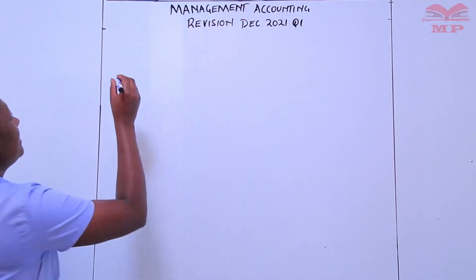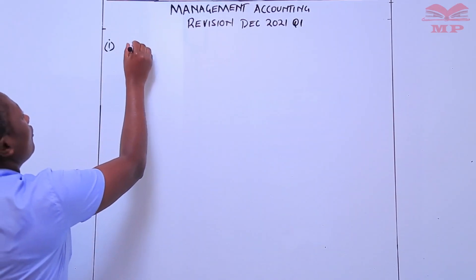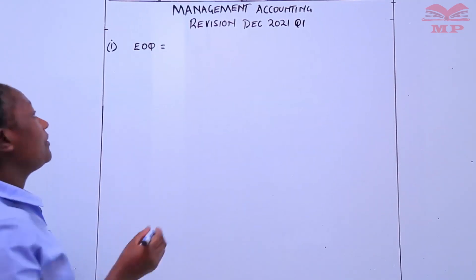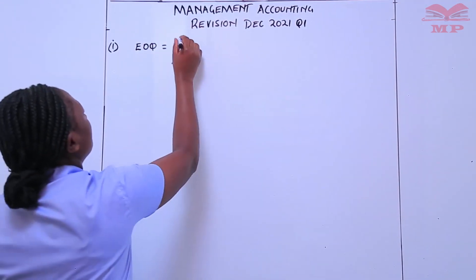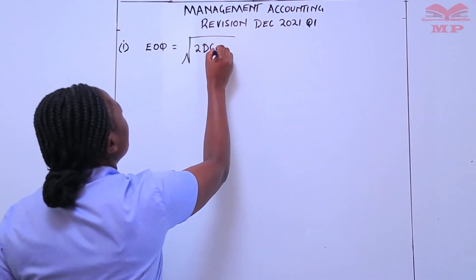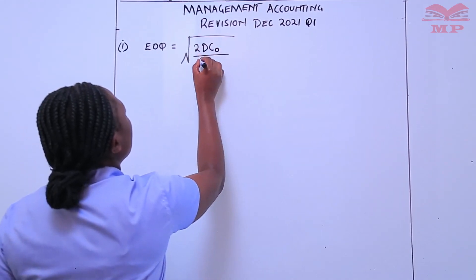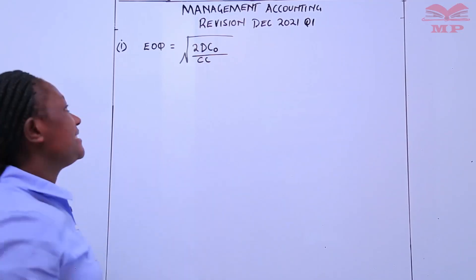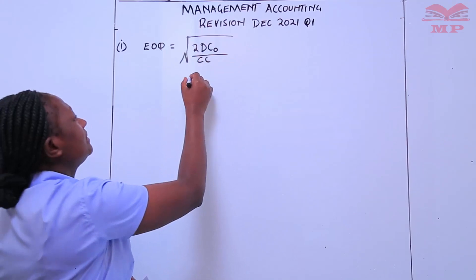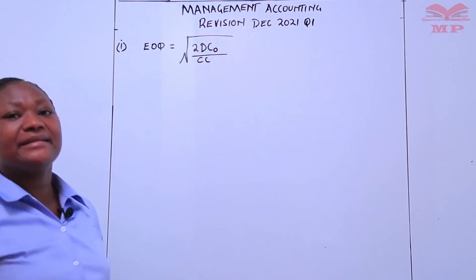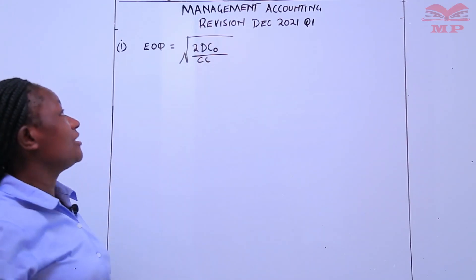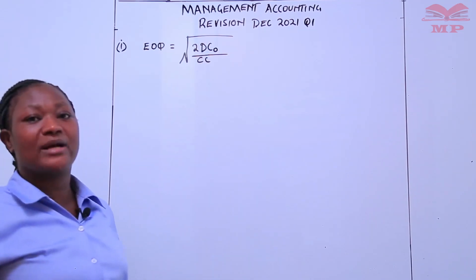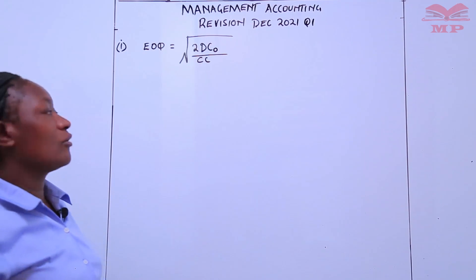We will begin with Roma number one, economic order quantity. We use the formula: square root of 2DC_O over C_C, where D is referring to the annual demand, C_O is referring to ordering cost per order, and C_C is referring to carrying cost or holding cost.